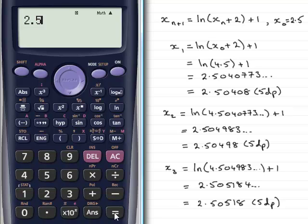Press equals, and that becomes our answer. Now, all I need to do is use that answer and type in this iterative formula. We'll start with the natural log. But instead of typing in x_n, I just press answer. That remembers my last answer, which was this one here, 2.5.